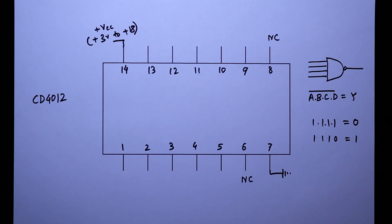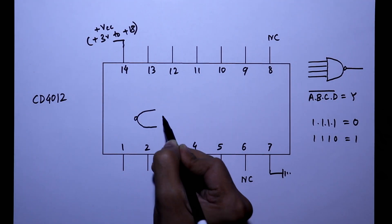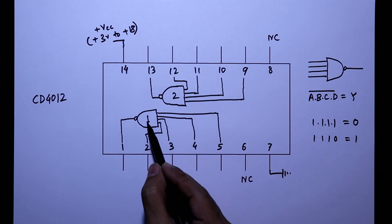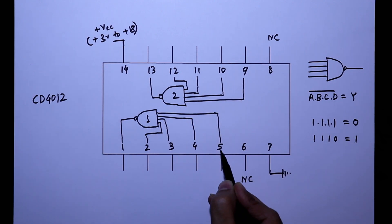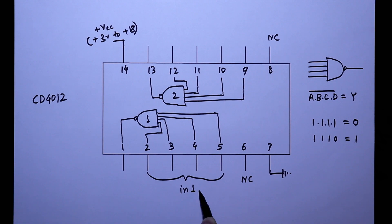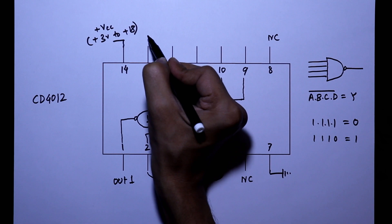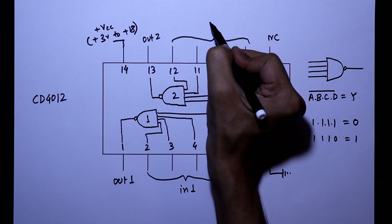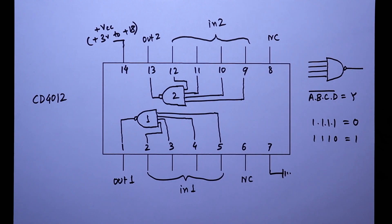Pin number 6 and pin number 8 are no connection pins. This IC has 2 NAND gates. Here is our NAND gate 1, NAND gate 2. For NAND gate 1, pin number 2, 3, 4, 5 are the inputs and pin number 1 is the output. For NAND gate 2, pin number 13 is output and all these 4 are inputs. So this is the pin diagram of the IC CD4012.